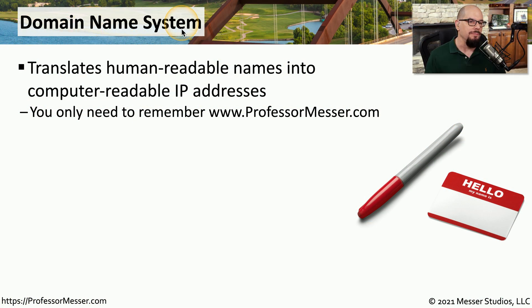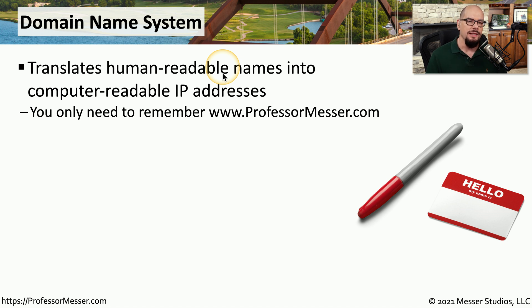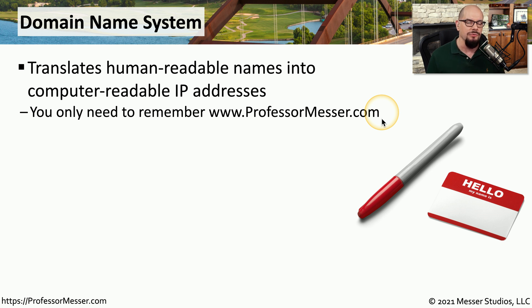DNS is the domain name system, and it's one of the most popular protocols on the internet because its job is to translate those human readable names that we use for things like web services into an IP address that can be used by our computers. This is a process that occurs every time you type something into your browser. For example, www.professormesser.com has to have some type of IP address associated with it, and it's the domain name system that provides that translation.